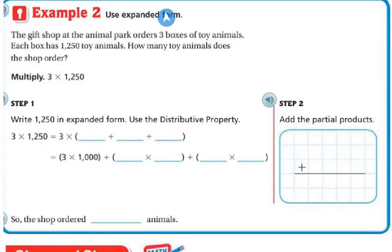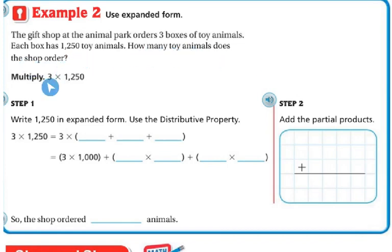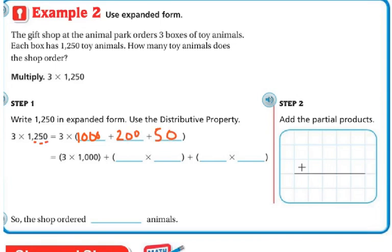Example 2. We're going to continue to use expanded form. The gift shop at the animal park orders 3 boxes of toy animals. Each box has 1,250 toy animals. How many toy animals does the shop order? So we're going to multiply 3 times 1,250. We keep the 3, and write 1,250 in expanded form: 1,000 plus 200 plus 50. There's nothing in the ones spot because it's 0. So I'm going to use the distributive property and multiply 3 times 1,000, 3 times 200, and 3 times 50.